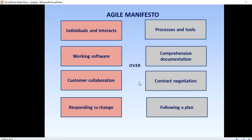Agile has several core values known as the Agile Manifesto: individuals and interactions over processes and tools; working software over comprehensive documentation; customer collaboration over contract negotiation; and responding to change over following a plan. Let's go through each one.